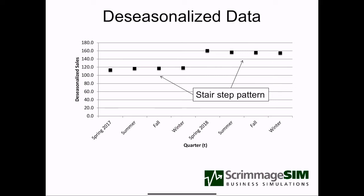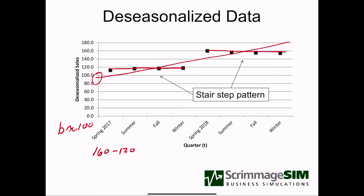Next, we want to use regression to find the slope and intercept for this data. It's a bit harder to visualize, but drawing a line in, we're probably somewhere in the 90 to 110 region for the b value — so b is maybe around 100. A good way to estimate the slope: in the first year we're around 120, and in the second year around 160. So 160 minus 120 divided by 4 quarters — that's 40 over 4, which equals 10. So our slope is approximately 10.